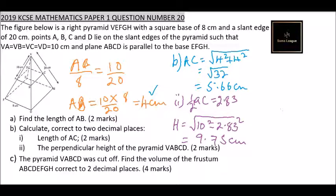For part c: the pyramid VABCD was cut off. Find the volume of the frustum ABCDEFGH, correct to two decimal places. To get the volume of a frustum, you take the volume of the whole pyramid and subtract the volume of the pyramid that was cut off.